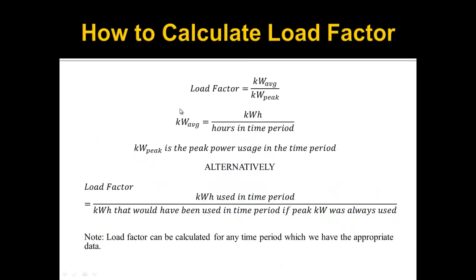We haven't learned how to calculate load factor yet, so let's look at how to calculate it. There are a couple different formulas. Load factor equals kilowatt average divided by kilowatt peak. To get kilowatt average, you take how many kilowatt hours you used in a time period and divide by the hours in that time period. Kilowatt peak is the peak power usage in the time period. You're going to be doing this monthly in your task.